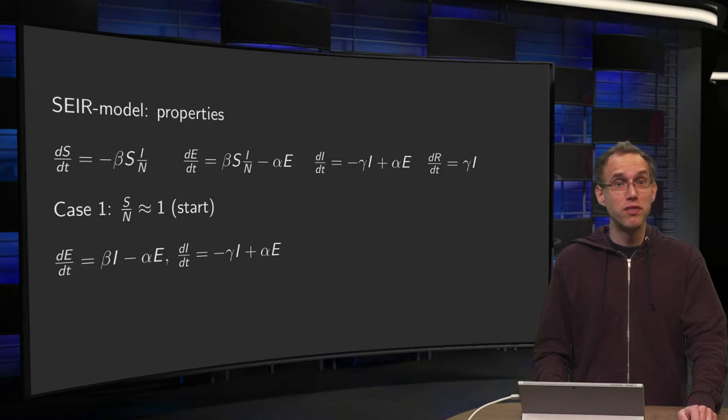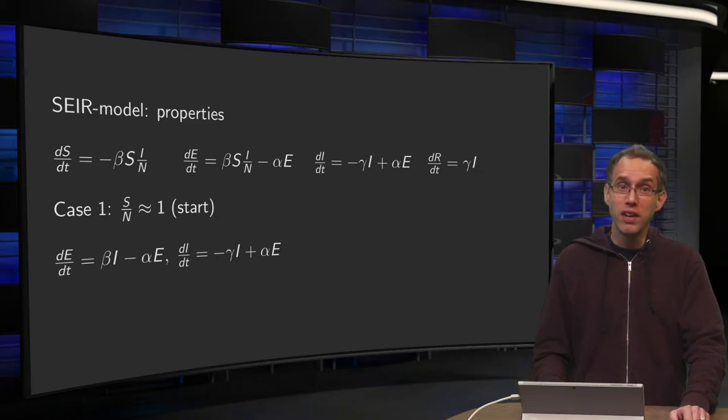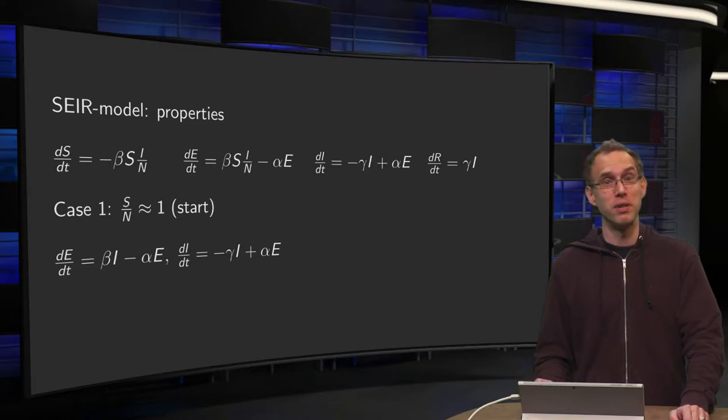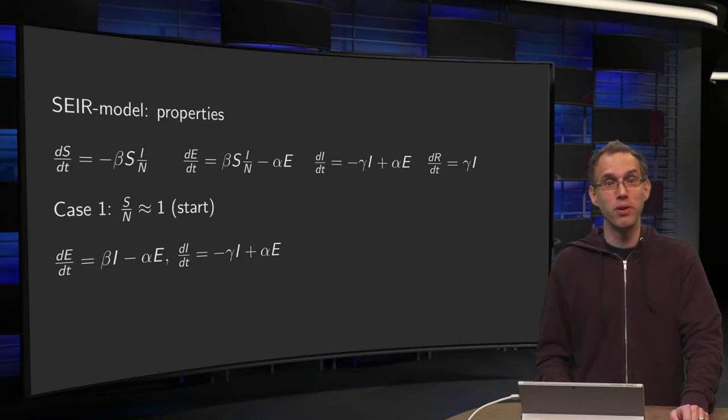The SIR model contains a few parameters, so for each set of parameters our solution will look differently. Remarkably, however, the qualitative features are the same for each set of parameters. In this video you'll see how the solution of a SEIR model looks like and we'll also see where the weaknesses in the model and possible ways to resolve it.